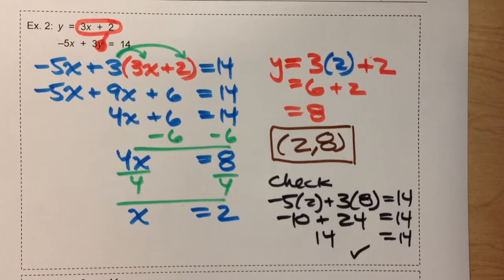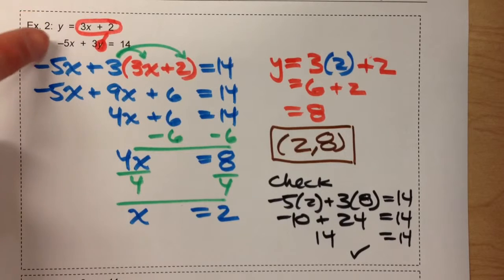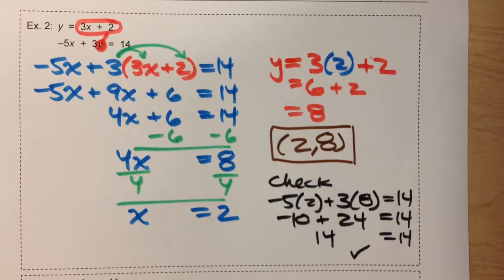So that is how to solve a system of equations when one of them is in slope-intercept form and the other is in standard form.